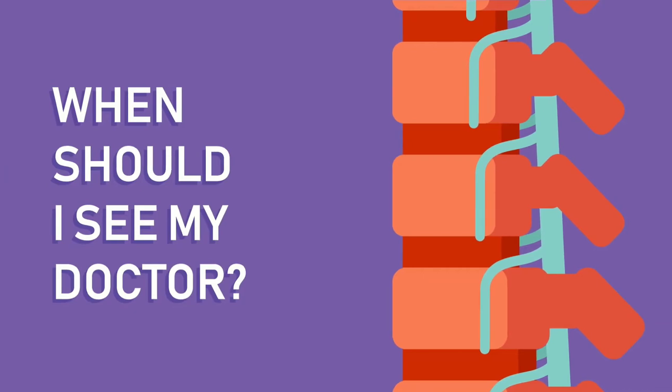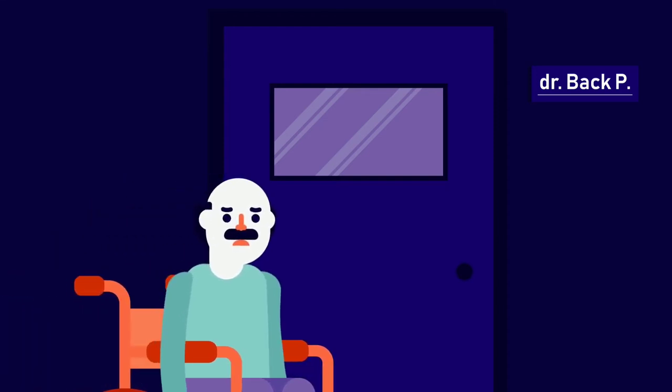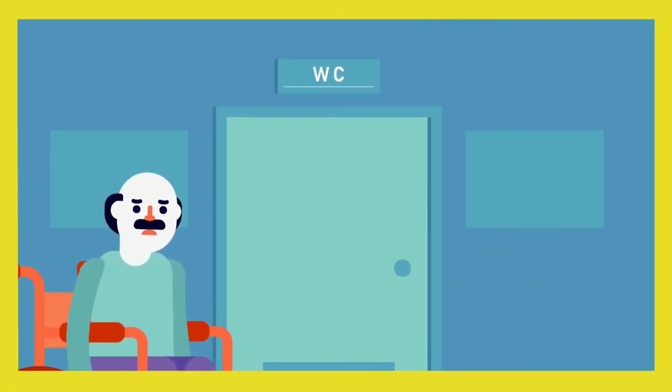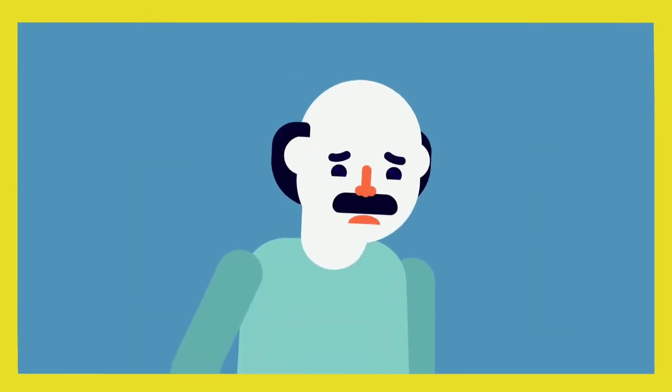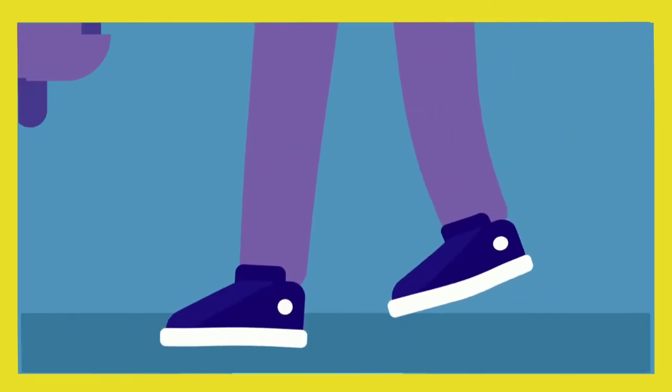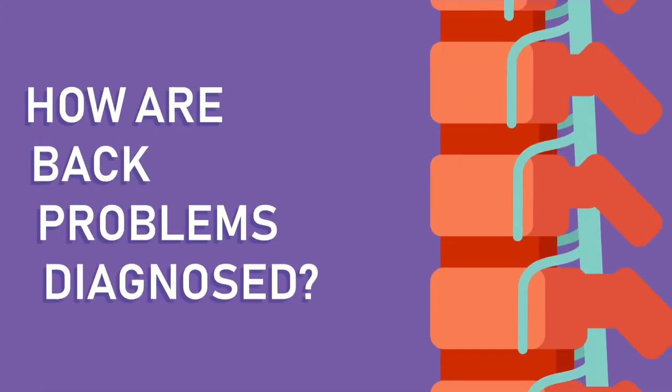When should I see my doctor? You should see your doctor if your pain is very severe or lasts for a long period of time and significantly affects your everyday activities. See your doctor immediately if you have difficulty controlling or passing urine, you lose control of your bowels, you feel numbness in the area of your anus or genitals, or you have weakness in your legs or are unsteady on your feet.